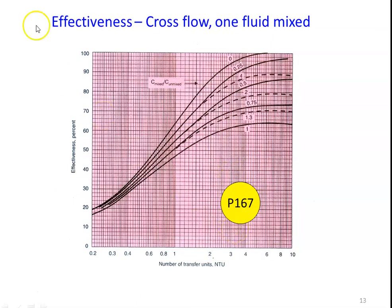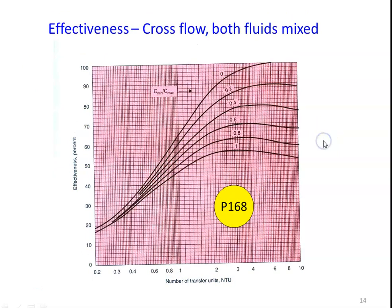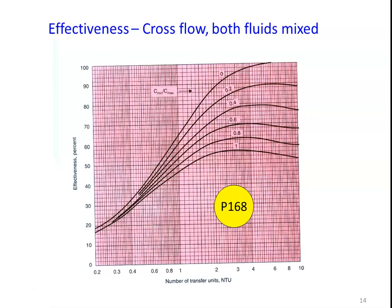Page 167 gives the effectiveness of the cross flow heat exchanger where one fluid is mixed and another fluid is unmixed, again with NTU on the x-axis and effectiveness on the y-axis. Page 168 covers the cross flow heat exchanger with both fluids mixed. Based on the data given, find the effectiveness or NTU from the appropriate chart, then calculate either the outlet temperature of the two fluids or the heat transfer area, for either the rating or sizing problem.